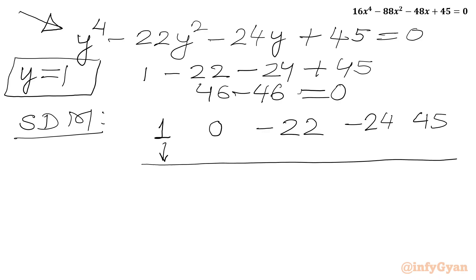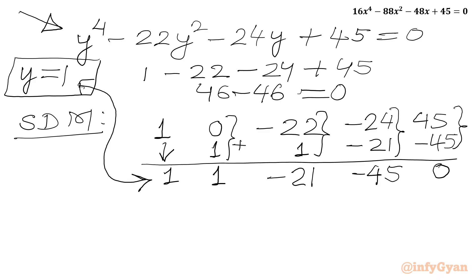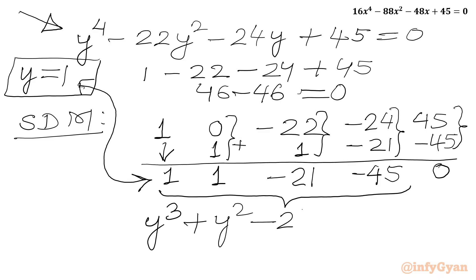We write the leading coefficient 1 as it is. We multiply our base solution 1 by 1 to get 1, and add to get 1. Again 1 times 1 is 1; adding gives minus 21. Then 1 times minus 21 is minus 21; adding gives minus 45. Then 1 times minus 45 is minus 45; adding gives 0. So the coefficients for the cubic equation are 1, 1, minus 21, minus 45, giving us y³ plus y² minus 21y minus 45 equals 0.